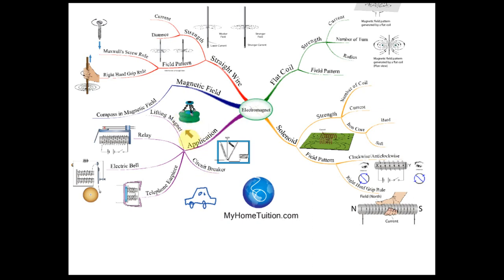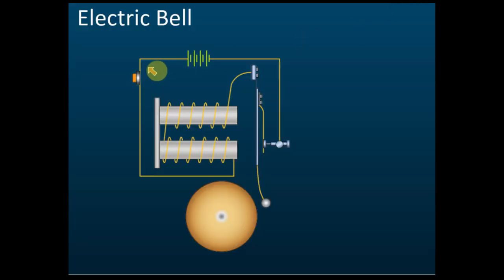That is for lifting magnet. The next thing we are going to discuss is the electric bell. For electric bell, relay, telephone earpiece, and circuit breaker, make sure you understand them properly, because they may come out in essay questions. They will ask you to describe how an electromagnet works in an electric bell, so you must tell all the steps.